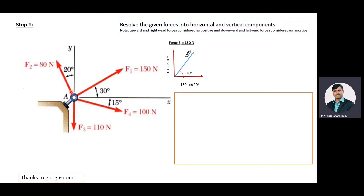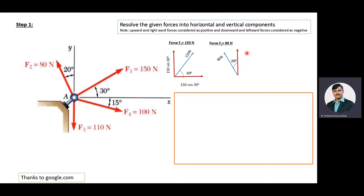Then we will resolve the 80 newton force. This force is making an angle of 20 degrees to the Y axis. Along the Y axis we get cos and along the X axis we get sin. So the horizontal component becomes 80 sin 20 degrees, and the vertical component becomes 80 cos 20 degrees. Because the horizontal component is moving towards the left, it is negative.